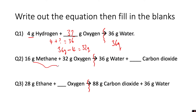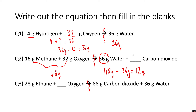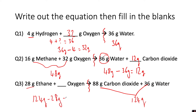For the second question, on the left side you have 48 grams of reactants total, so the right side must also equal 48 grams. 36 grams of that is water, so 48 minus 36 gives you 12 grams of carbon dioxide. For the final question, 88 plus 36 gives 124 grams on the products side, so 124 minus 28 grams of ethane gives you 96 grams of oxygen.